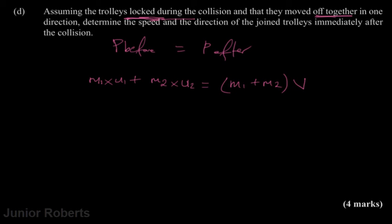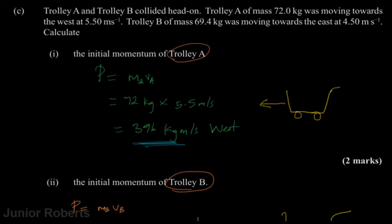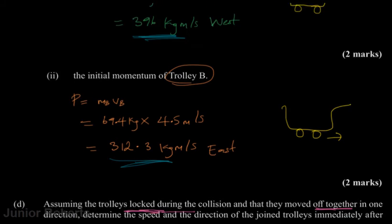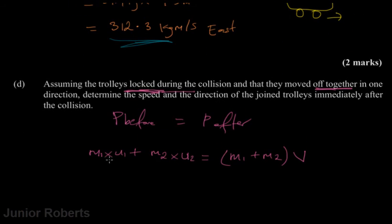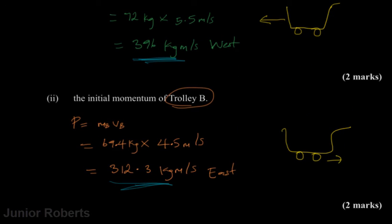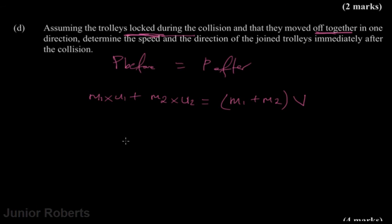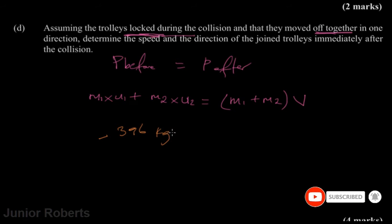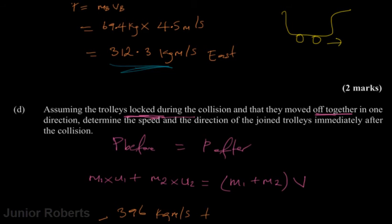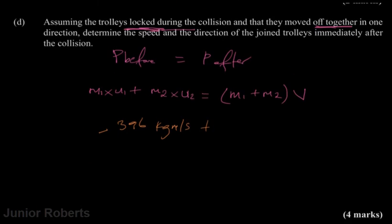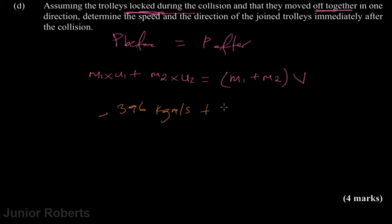Taking east as positive and west as negative, the momentum of Trolley A is −396 kg·m/s and the momentum of Trolley B is +312.3 kg·m/s. Adding these together: −396 + 312.3 equals −83.7 kg·m/s.